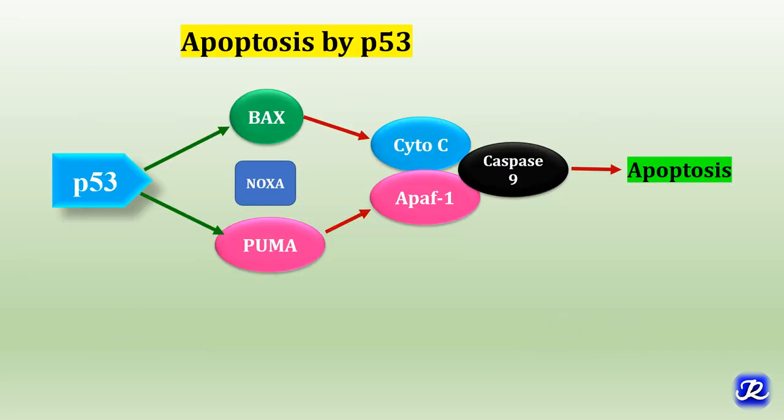The third function of P53 is apoptosis — programmed cell death. When DNA damage is not repairable, P53 induces transcription of pro-apoptotic genes like Bax, Noxa, and Puma, ultimately leading to formation of a complex of cytochrome C, APAF1, and caspase 9, which causes apoptosis. Mutation in apoptotic genes leads to malignant transformation of cells. Thus P53 helps in maintaining genome stability and is rightly called the guardian of the genome.